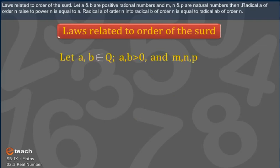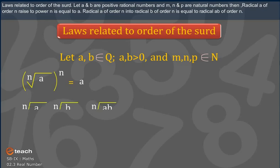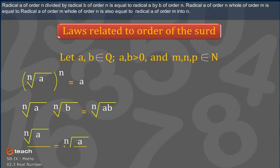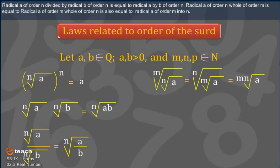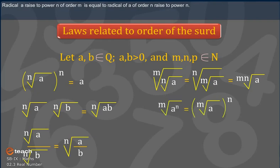Laws related to surds: Let a and b be positive rational numbers and m, n, and p be natural numbers. Then: the nth root of a, raised to the power n, equals a. The nth root of a multiplied by the nth root of b equals the nth root of ab. The nth root of a divided by the nth root of b equals the nth root of a divided by b. The mth root of the nth root of a equals the nth root of the mth root of a, which also equals the (m×n)th root of a. The mth root of a raised to power n equals the nth root of a raised to power n.